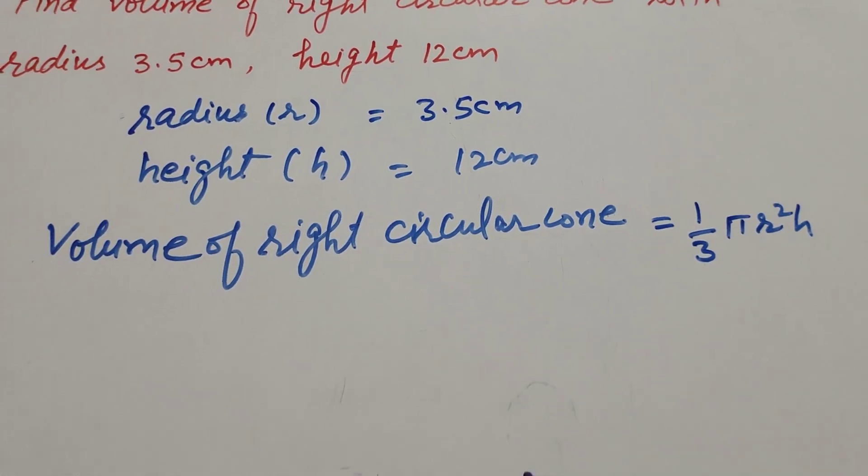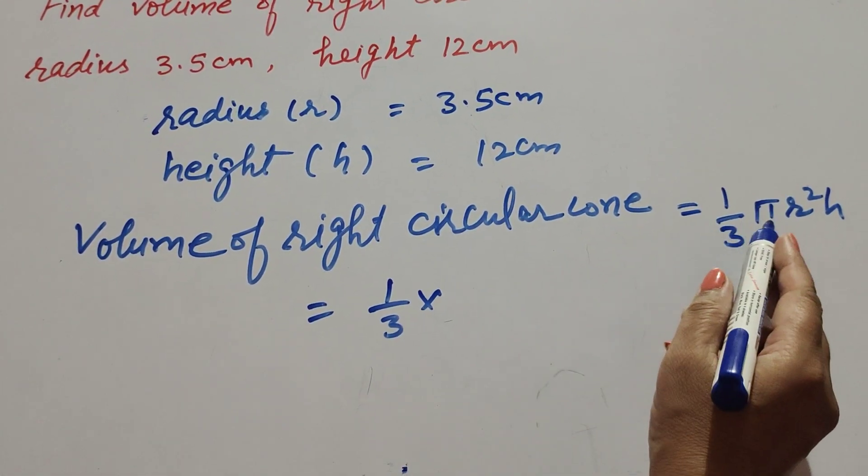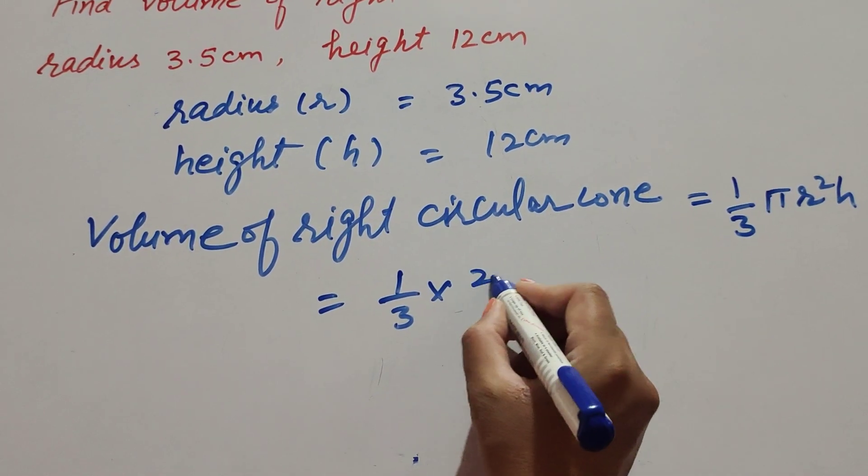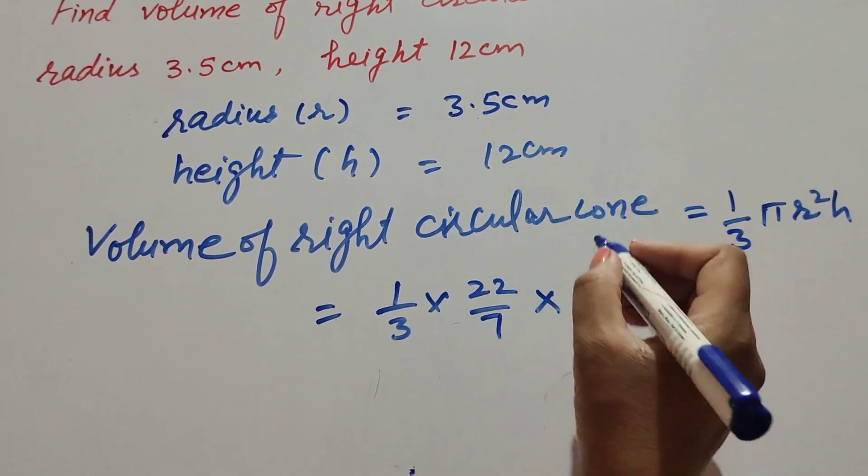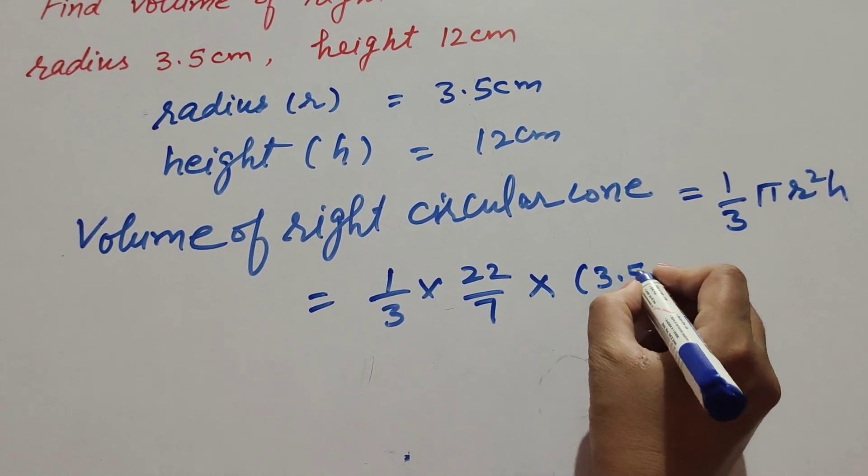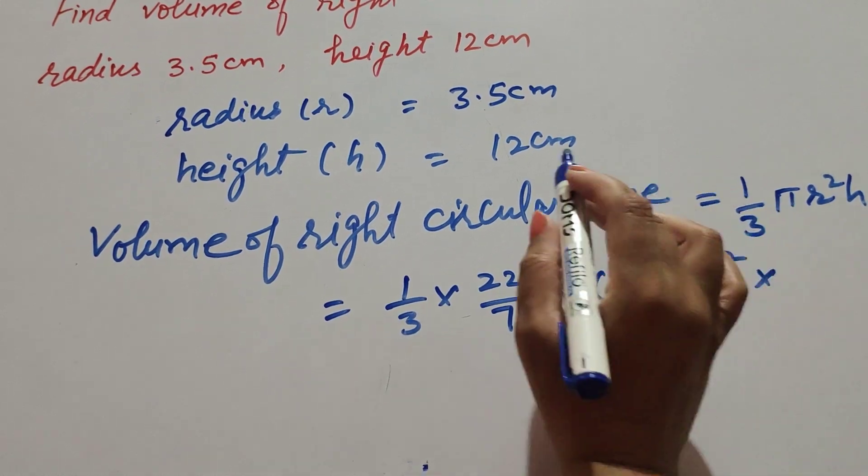So it equals one-third times pi. Pi's value is constant 22 over 7, multiplied by r squared, which is 3.5 cm squared, times h, which equals 12 cm.